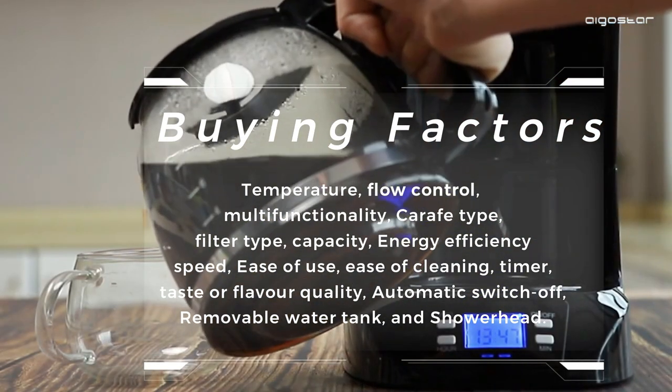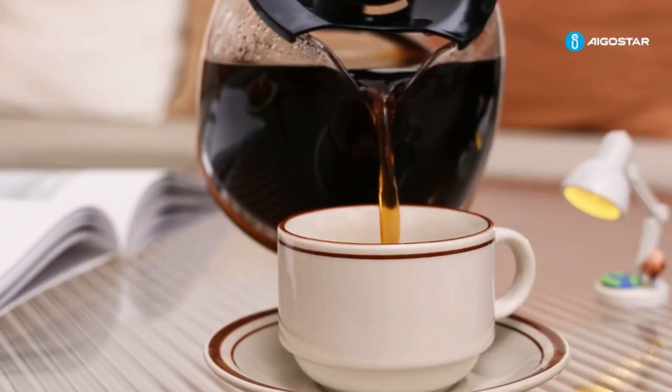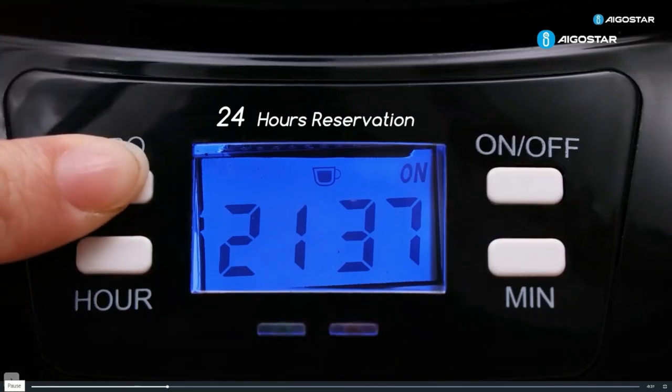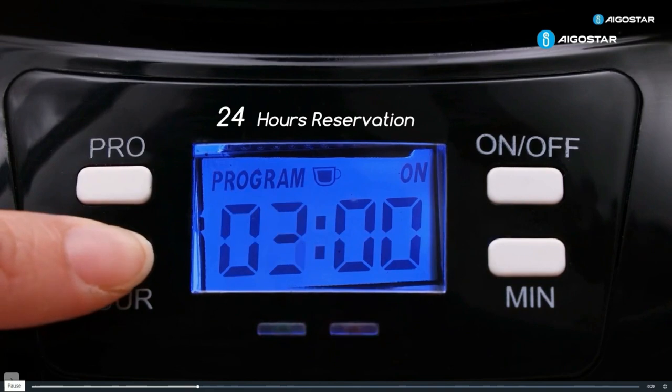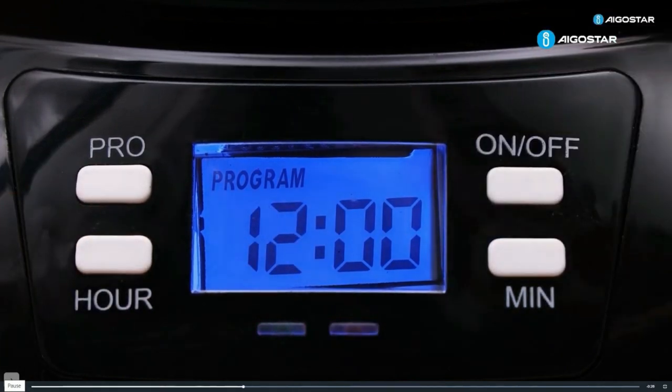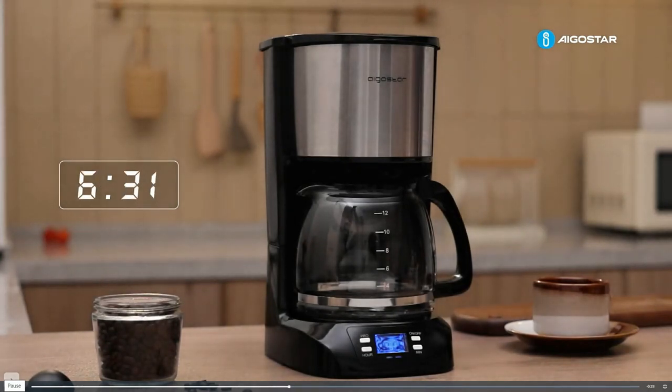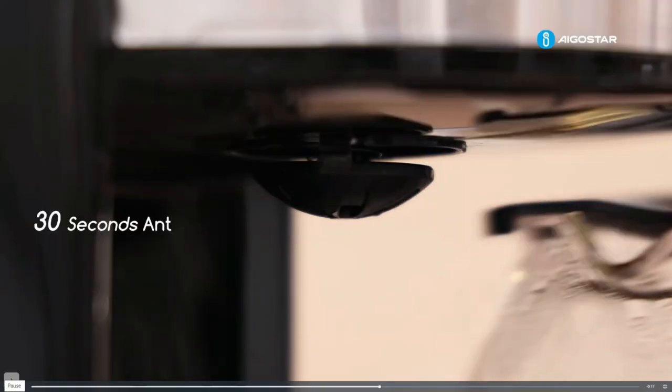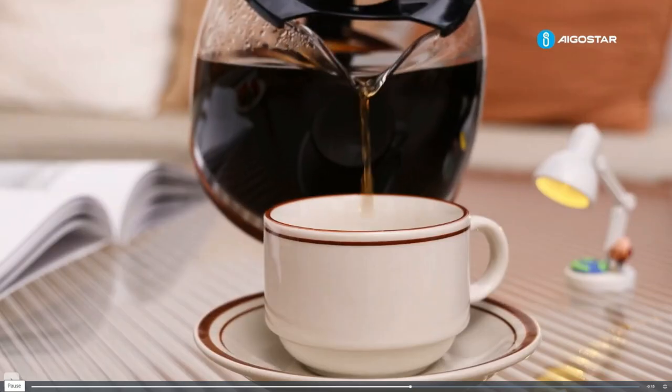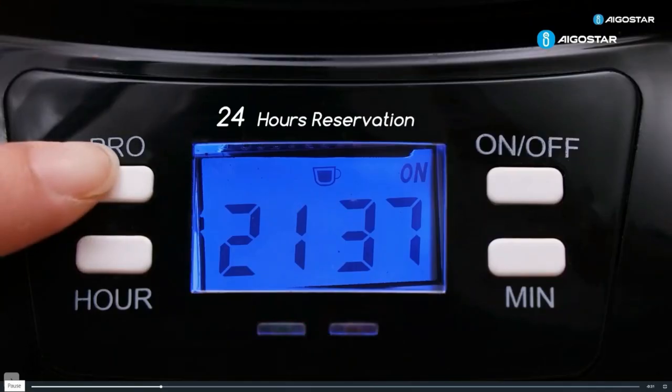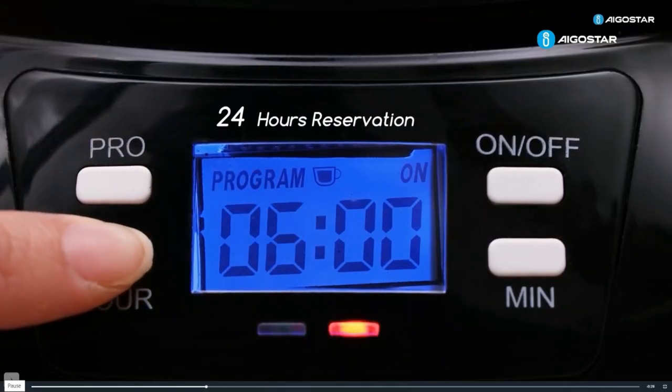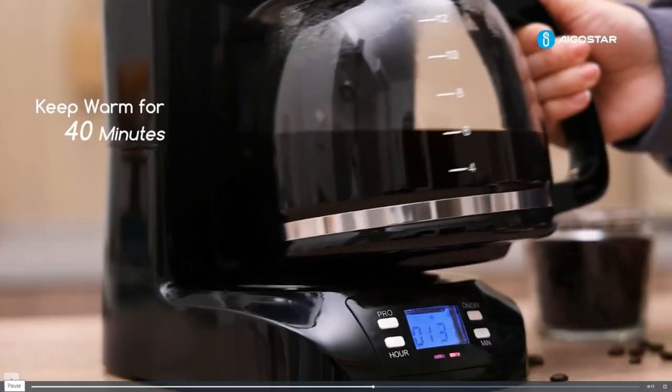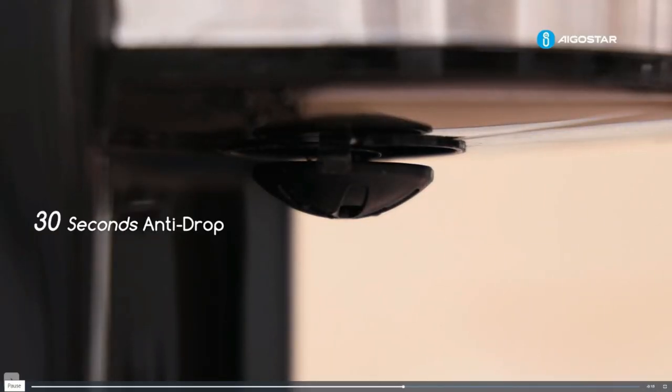The EgoStar Benno 30YWZ does well with these buying factors like its 24-hour timer that allows you to set the machine to start brewing coffee at a specific time, which means you can wake up to freshly brewed coffee. The coffee maker also has a 40-minute keep warm function that maintains the ideal temperature for up to 40 minutes after brewing.